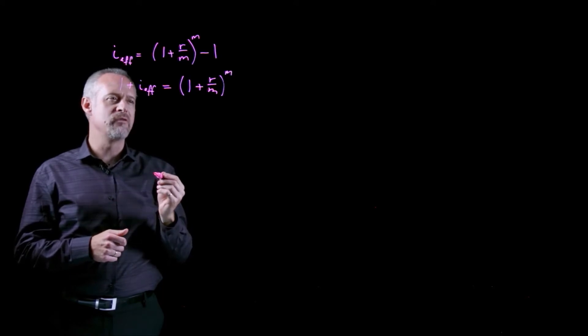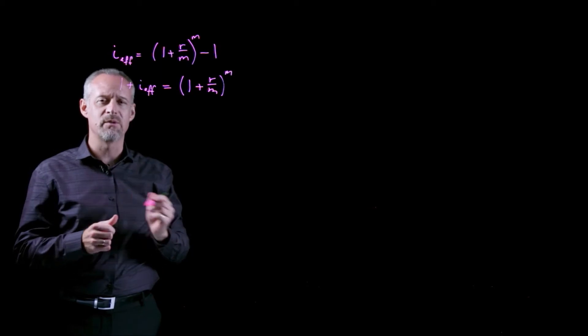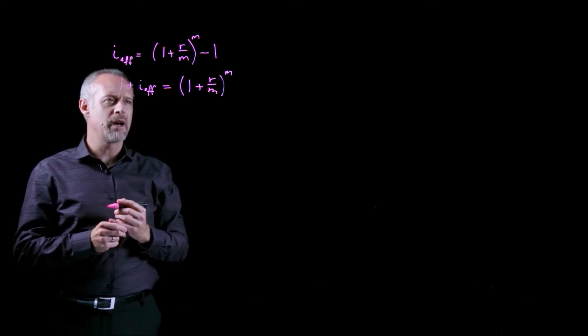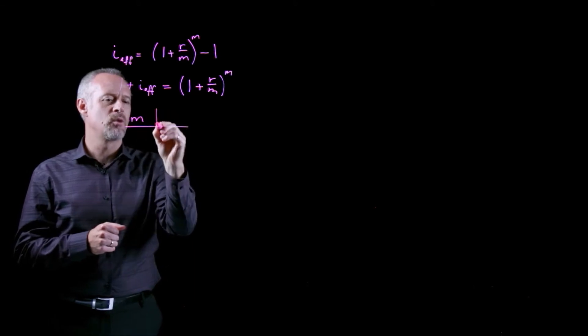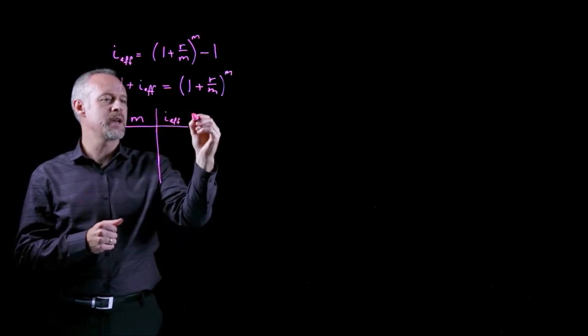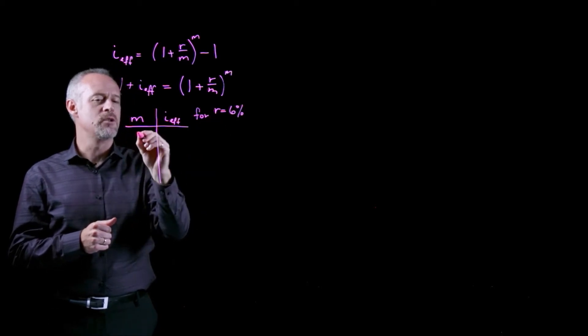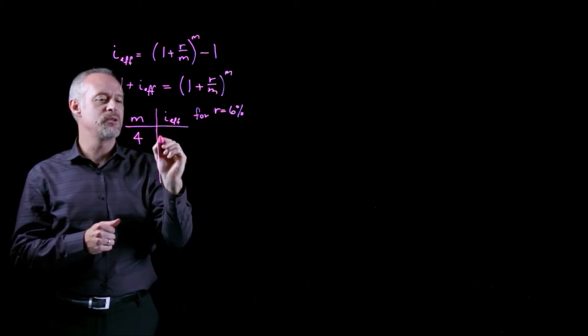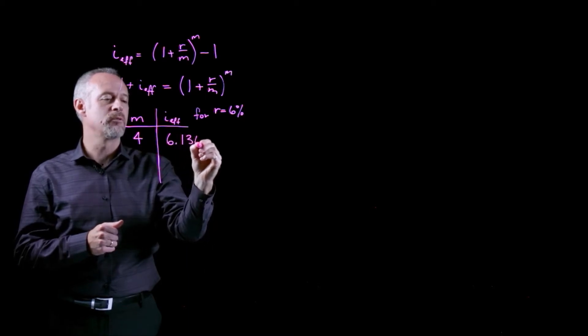If you recall from the previous example, we used a nominal rate of 6%. This problem uses 5%, but I'm going to use 6% just to keep some continuity with the previous problem where we talked about nominal and effective interest rates. If I make a little table and I say the number of compounding periods will be related to the effective interest rate using the above formula, if we do this for a nominal rate of 6%, if I use 6% compounded quarterly, that would mean my number of compounding periods is 4. And if I do that, we ended up with an effective interest rate of 6.136%.